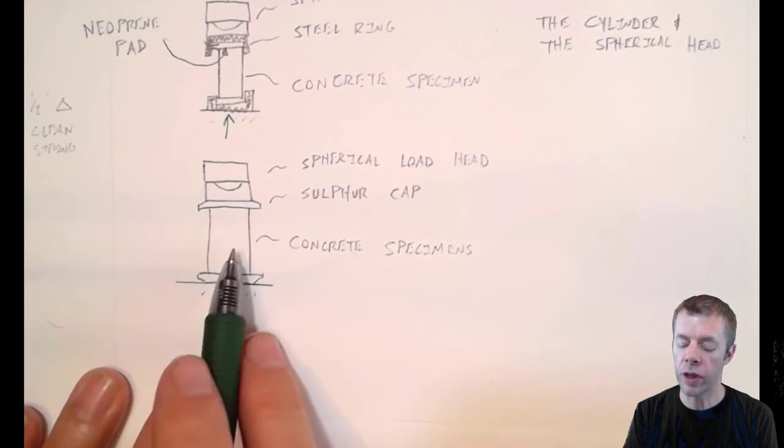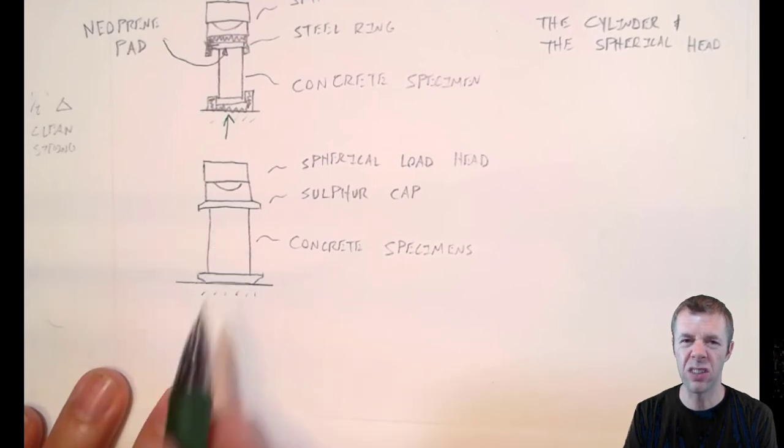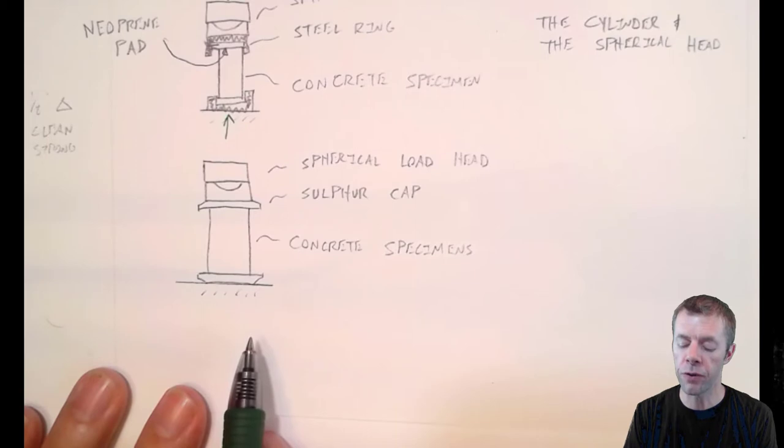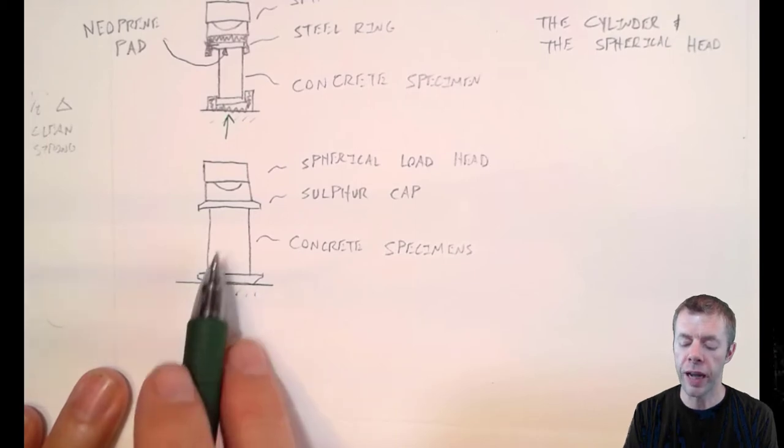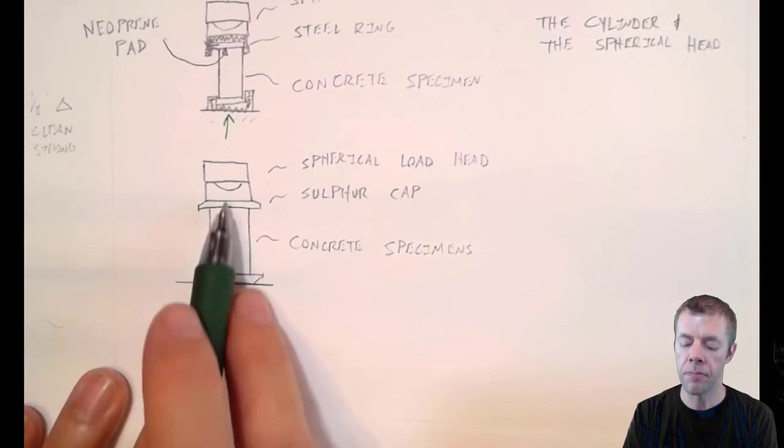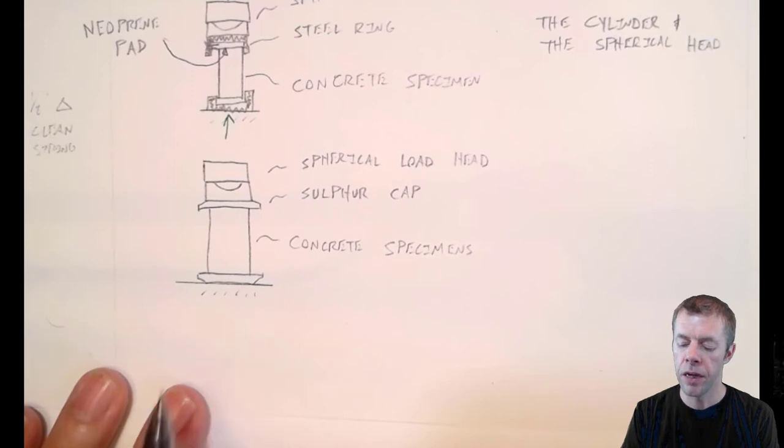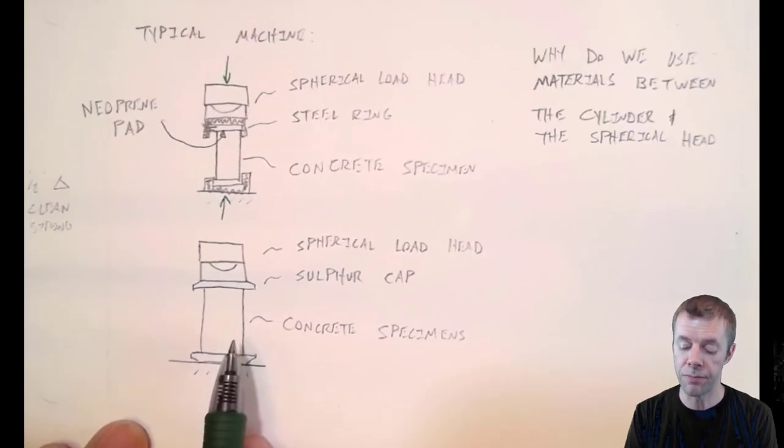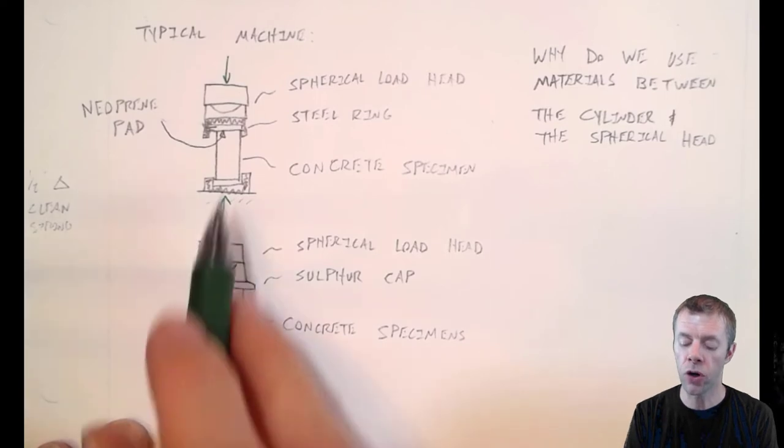This is really useful if the ends of your concrete aren't perfectly flat. If they're rough a little bit or off a little bit, you can sulfur cap them, get it lined up, and then start to load it. The neoprene is also very useful if the material is not flat. You need something between the concrete and the platen.